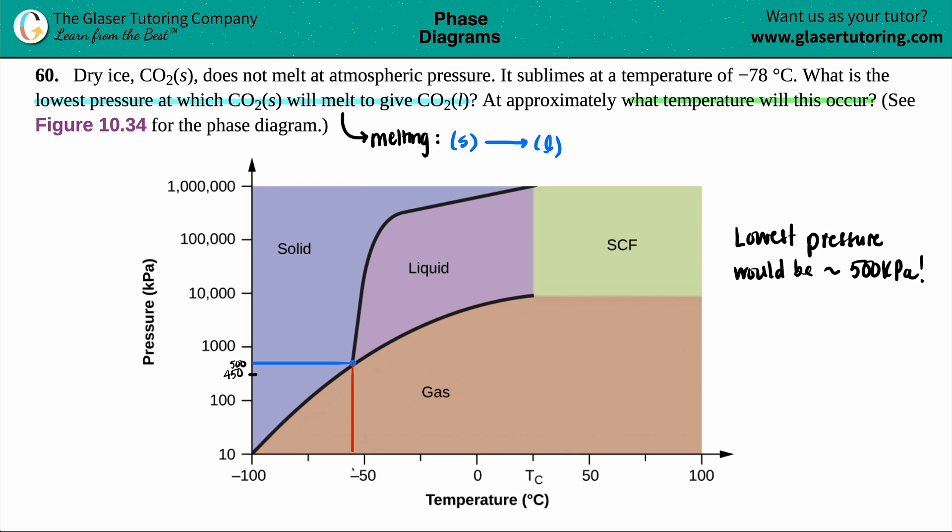We're pretty close to -50°C on the x-axis. The middle number is -75°C because it's between -50 and -100. So roughly here would be about -60°C. The lowest pressure would be roughly 500 kilopascals at -60°C.